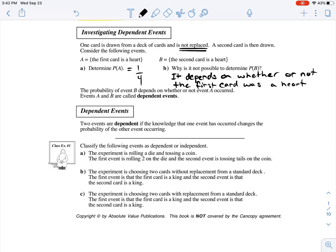So the probability of event B depends on whether or not event A occurred. So events A and B are called dependent events.